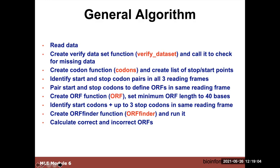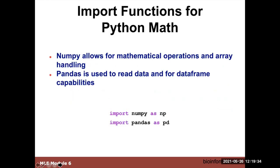We also encode another check to identify start codons with up to three stop codons in the same reading frame, just to avoid truncating some of the genes. We combine the codons and ORF functions together to create the ORF finder function, then run it and calculate the correct and incorrect ORFs, using correct ORFs tabulated by NCBI. In this case, we're analyzing the E. coli genome.